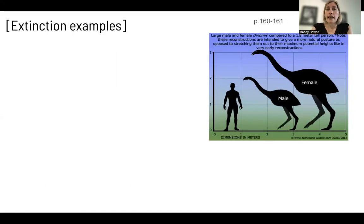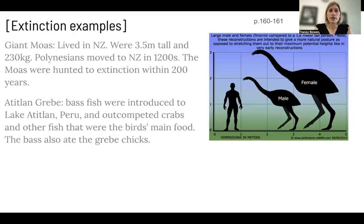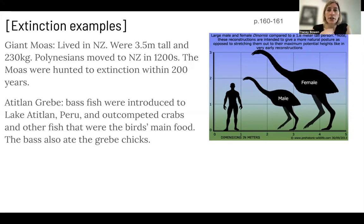Some extinction examples: giant moas — that's the picture on the right — lived in New Zealand and were three and a half meters tall. They were giant birds. Then humans moved to New Zealand, Polynesians in the 1200s, and moas were hunted to extinction within 200 years, obviously likely for food.